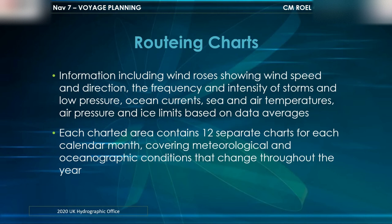Each charted area contains 12 separate charts for each calendar month, covering meteorological and oceanographic conditions that change throughout the year.